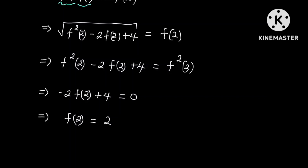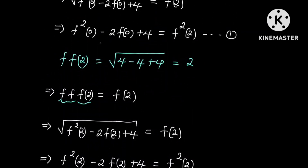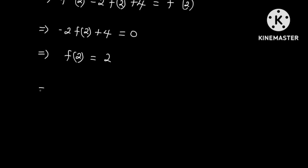Now going back to equation 1, we have f squared of 0 minus 2 times f of 0 plus 4 is equal to f squared of 2. But we know that f of 2 is equal to 2, so f squared of 2 will be equal to 4. So this implies that f squared of 0 minus 2 times f of 0 plus 4 is equal to 2 squared.